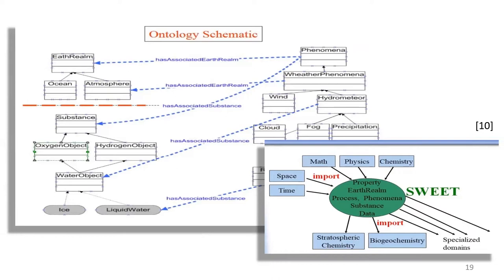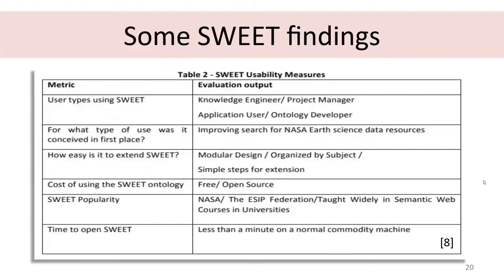The faceted aspects all come together into a unified SWEET. Findings from a cited reference show benefits of SWEET as a free and open-source resource. User types vary from project managers unfamiliar with ontologies to actual ontology developers. It was used to improve NASA search for Earth science data, and it has been used in both courses at universities and in ESIP, as well as other agencies.